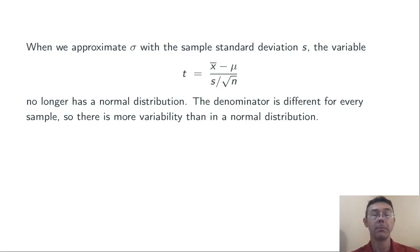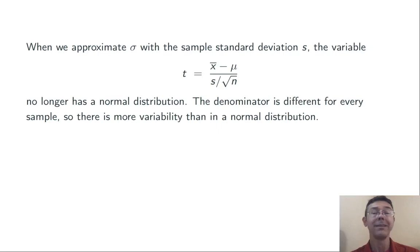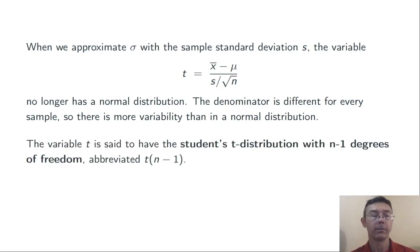Now, if we approximate the population standard deviation sigma with the sample standard deviation s, we get a very similar-looking formula: x-bar minus mu over s divided by the square root of n. But this variable is no longer going to have a normal distribution. The denominator is different for every single sample — every time we get a new sample of size n, we get a new x-bar as well as a new s. This means the variable is going to have more variability than the z-score. Fortunately, we have a full description of its distribution.